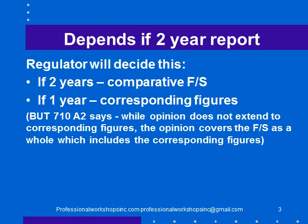I've always been puzzled by this. If we are auditing a set of financial statements that has two columns of numbers and we're responsible for the first column and asked about the second column, regulators have decided they want to be very clear that the auditor is explicitly responsible for both columns.